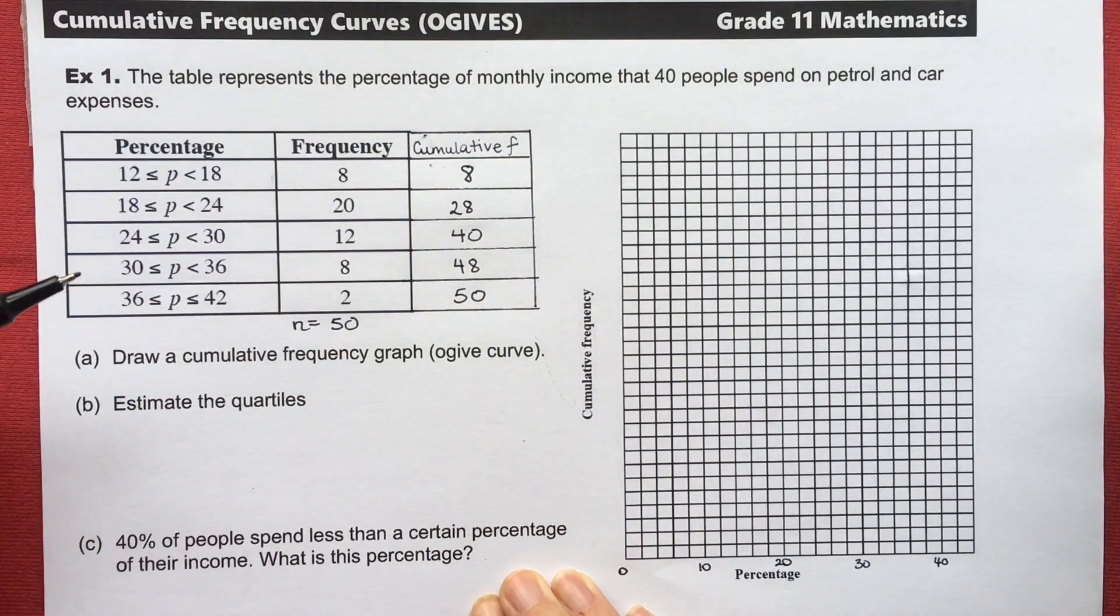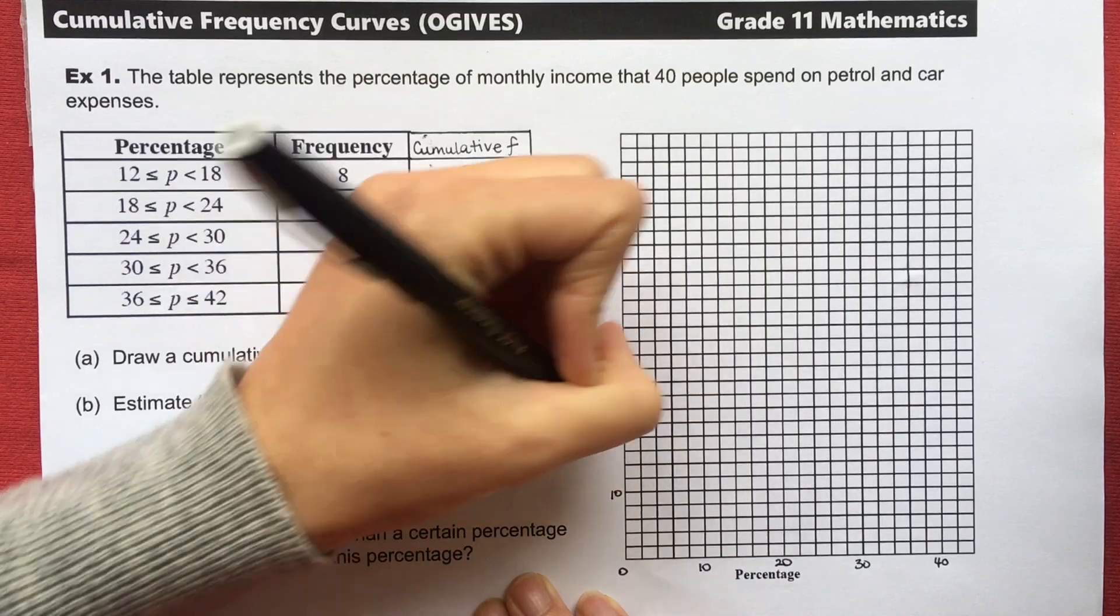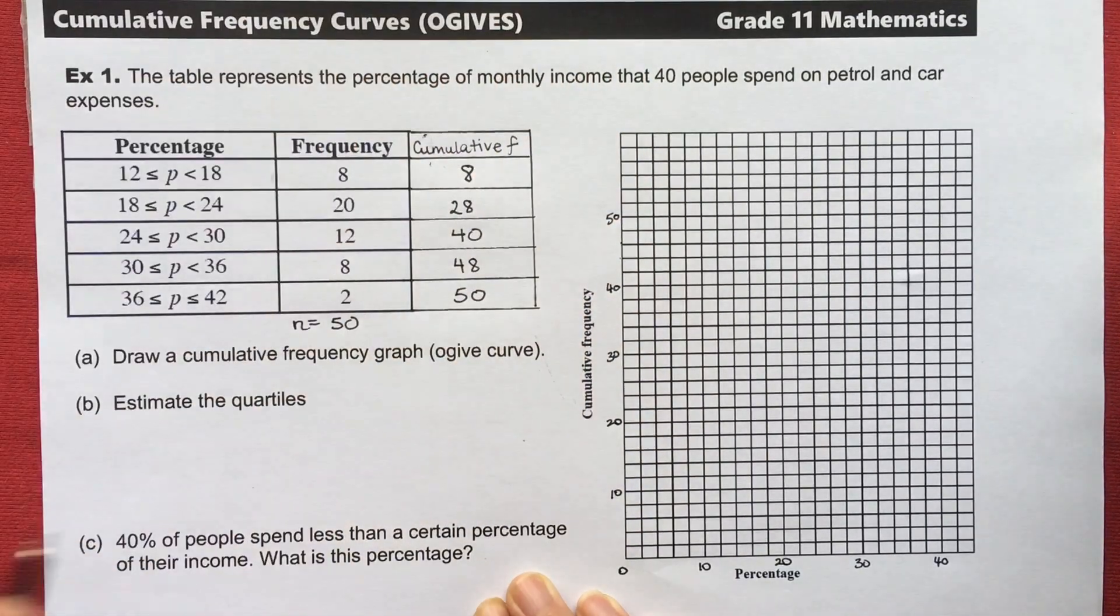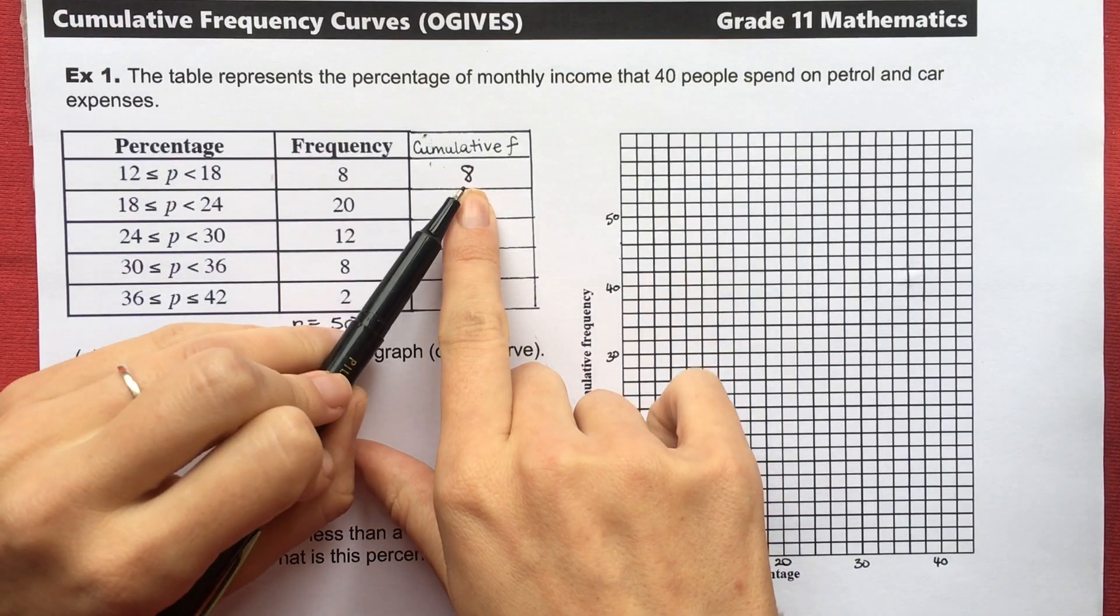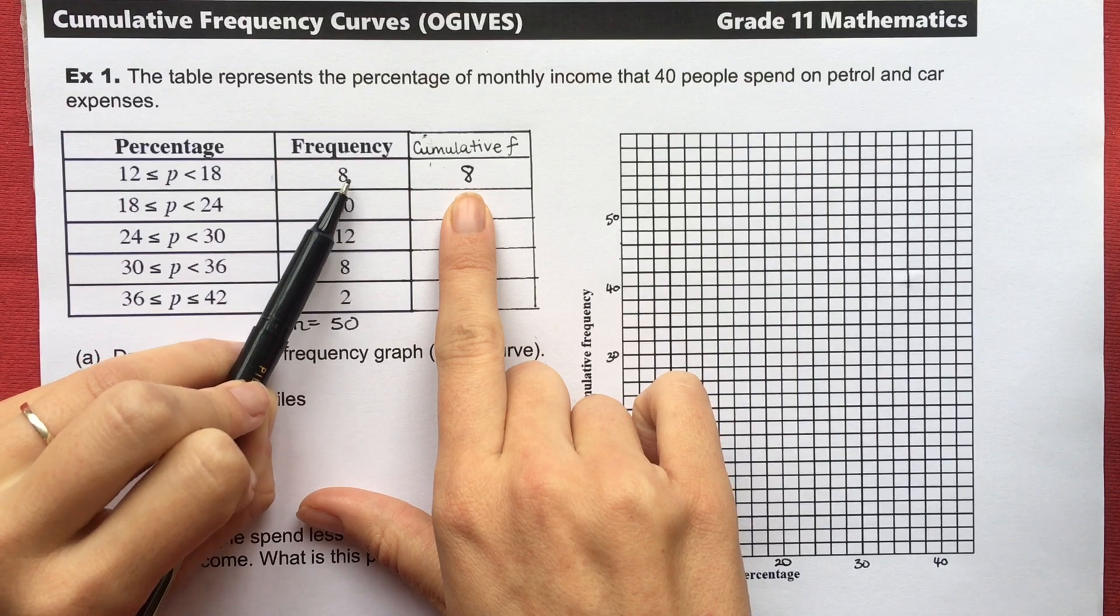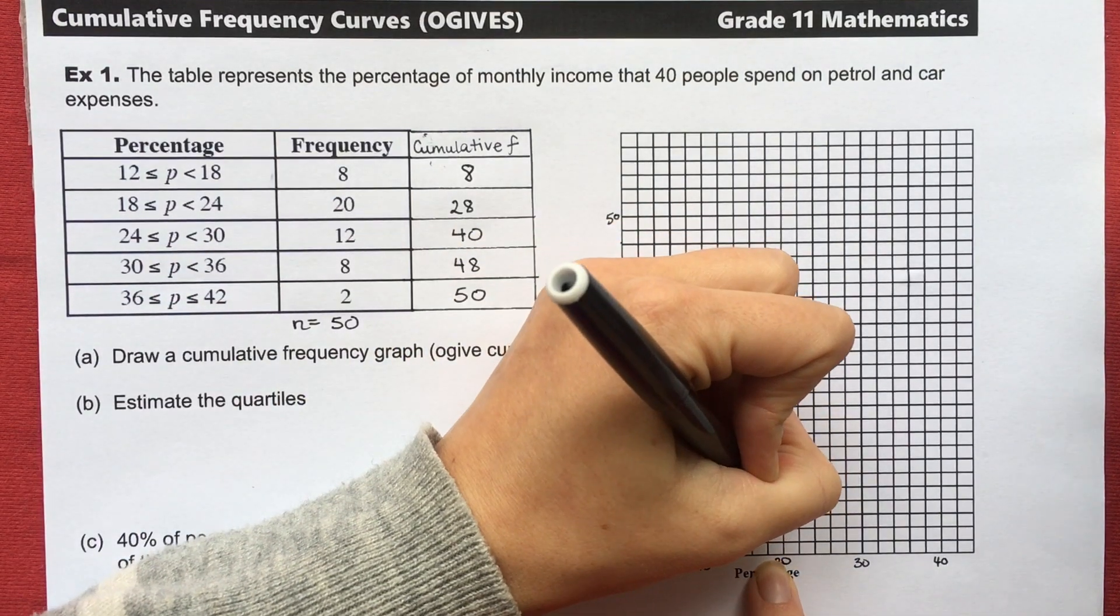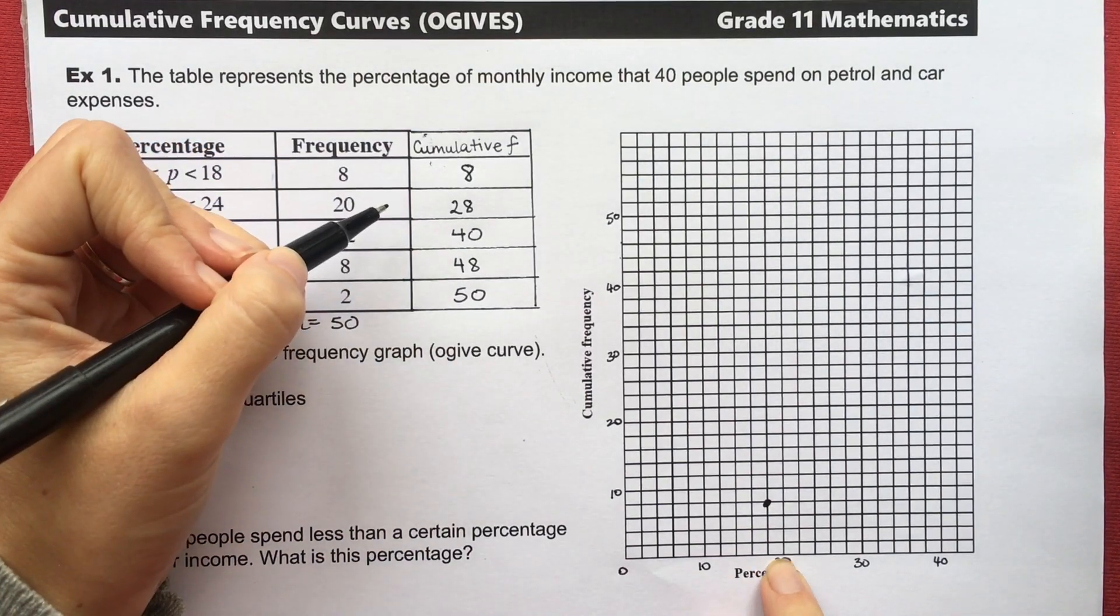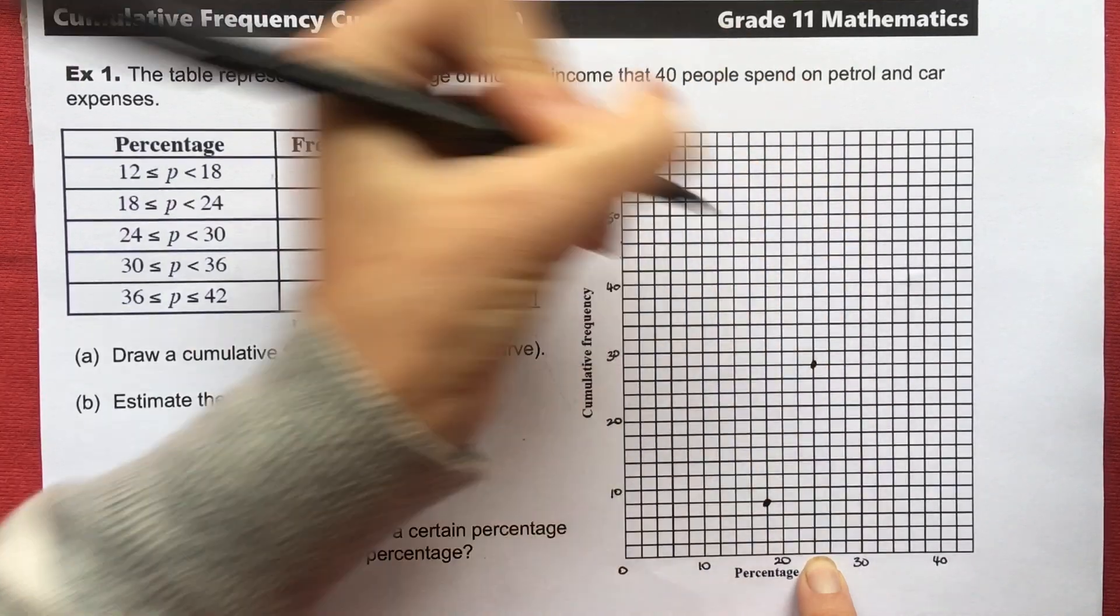I've got cumulative frequency on my y-axis and again I need to choose a suitable scale. I'm going up to 50 at the top. Now like Mr. Wu said we need to graph the cumulative frequency with the end point of the interval because that's the amount that's accumulated. 8 people have accumulated by the time we get to 18. So my first coordinate is at 18 and 8. So 18 and 8 is there. My next one is at 24 and 28.